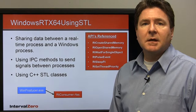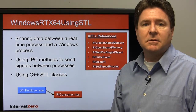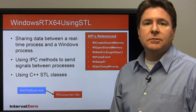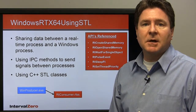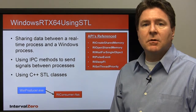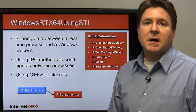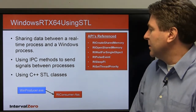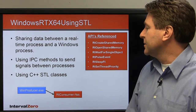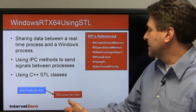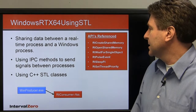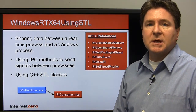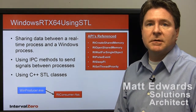The first sample we can take a look at is the Windows RTX 64 using STL. We created this sample for two reasons: one was to show how to use the C++ standard template libraries, and the second was to show how to share data between two processes. One process runs in Windows — we call it winproducer.exe — and the other runs in our real-time subsystem, the rtconsumer.RTSS. To share data, we need to also signal each other when we've consumed that data or when there's new data.